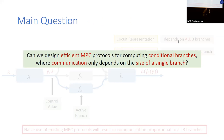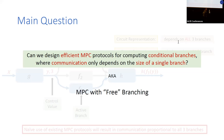Therefore, the question we ask in this work is whether it's possible to design an efficient MPC protocol for securely computing conditional branches, where the total communication only depends on the size of the largest branch. In other words, is it possible to compute conditional branches at the same cost of computing a regular circuit of the size of a single branch?